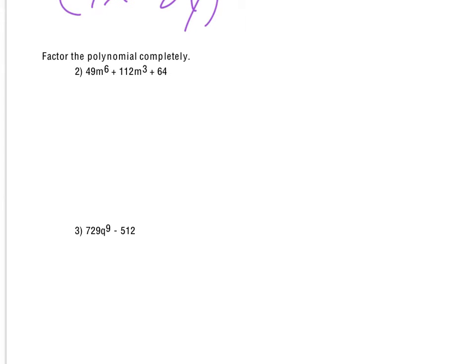So when I do square root those, I get 7m³, and I get 8. When I double them, I do get the middle term. So this one does again factor as 7m³ plus 8. So again, it's not exactly the same question, but very close.